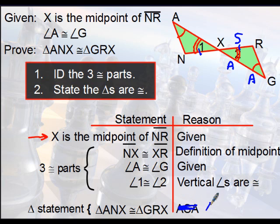Let's try again. Angle, angle, side is the reason for the triangles being congruent.